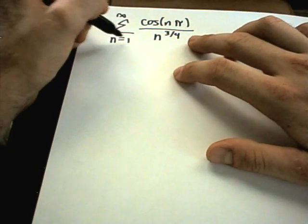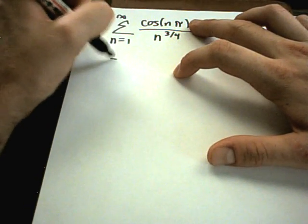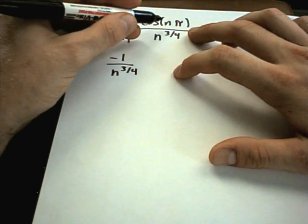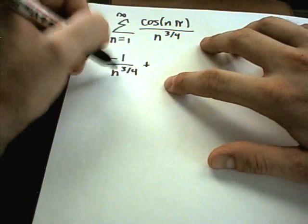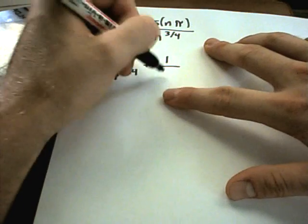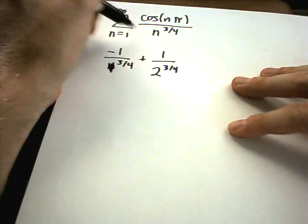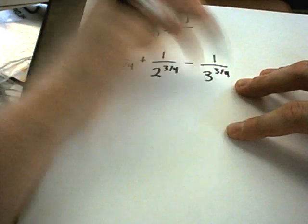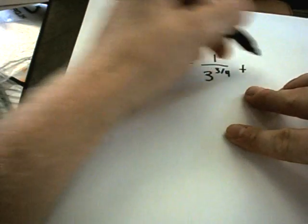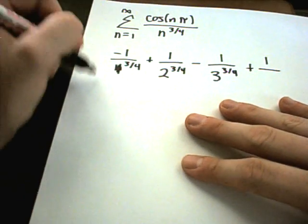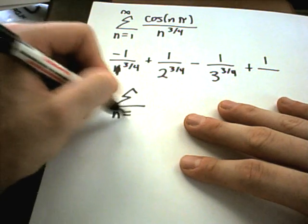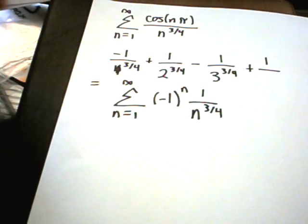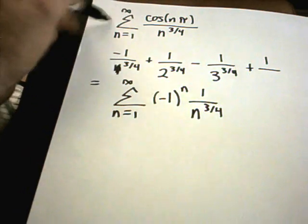But notice, if I start writing out terms, if I plug in 1, I'll get cosine of pi. Cosine of pi is negative 1. Then I'll plug in n equals 2. That'll give me cosine of 2 pi. Cosine of 2 pi is plus 1. I should plug in a 1 here. And then I would have 2 to the 3 fourths. When I plug in n equals 3, I'm going to get a negative 1 on top. If I plug in n equals 4, I'll get cosine of 2 pi, which is going to give me a positive term.